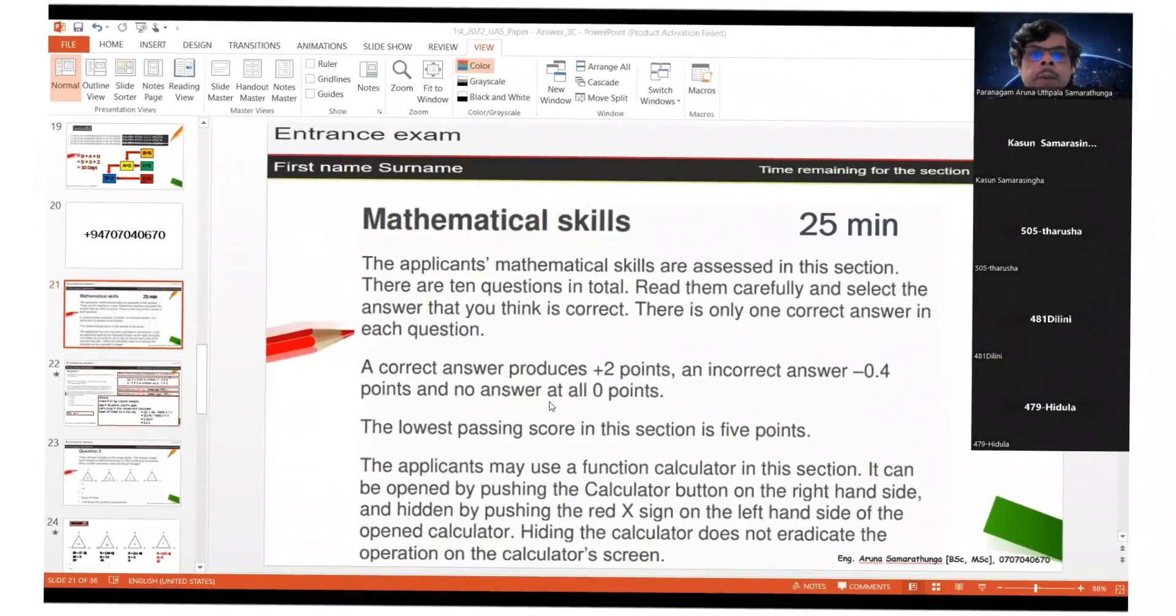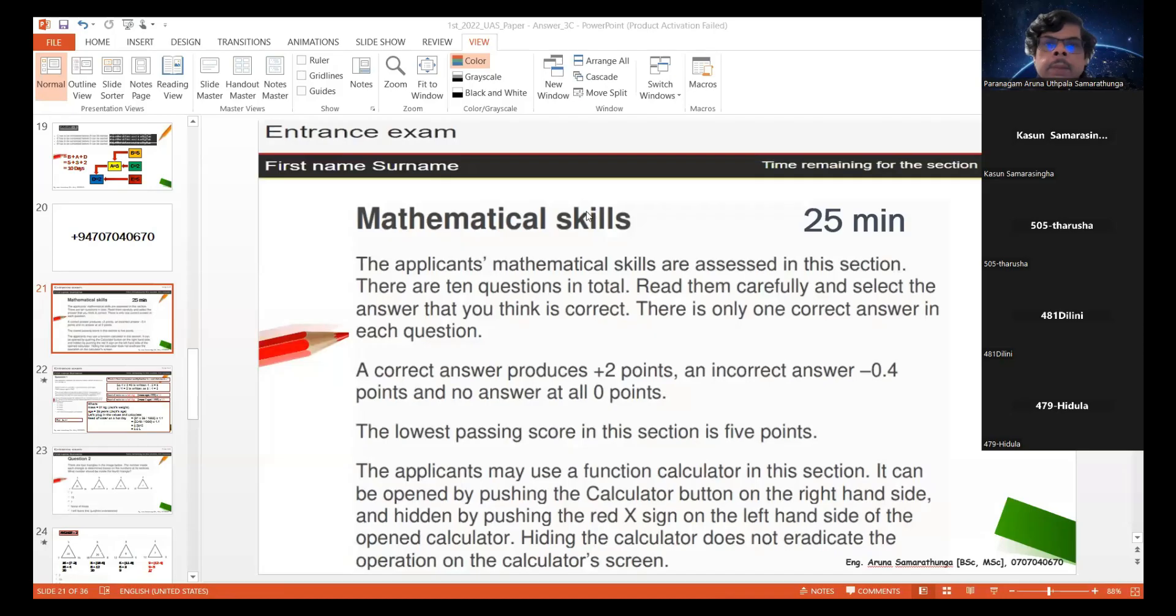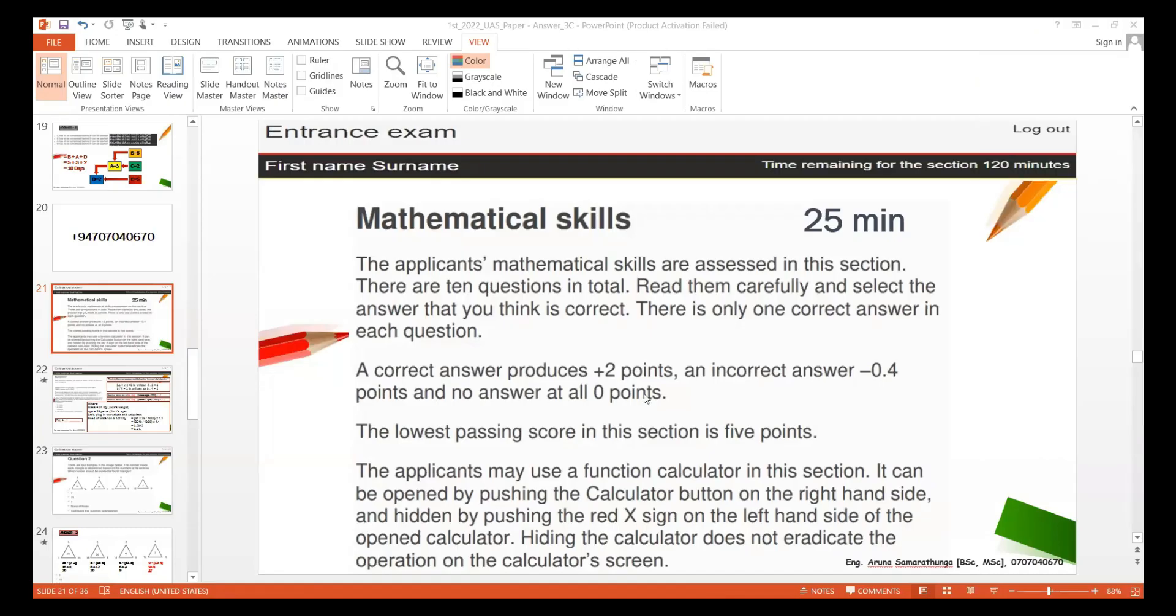Okay, here also this is the mathematical skill part, general mathematics. So you will have this paper for this exam. Here also you have minus marks, so be careful about that. You will have 10 mathematical questions - these are very easy, actually, not like reasoning skill. And you have 25 minutes to answer, normally one question takes two minutes. Let's go.